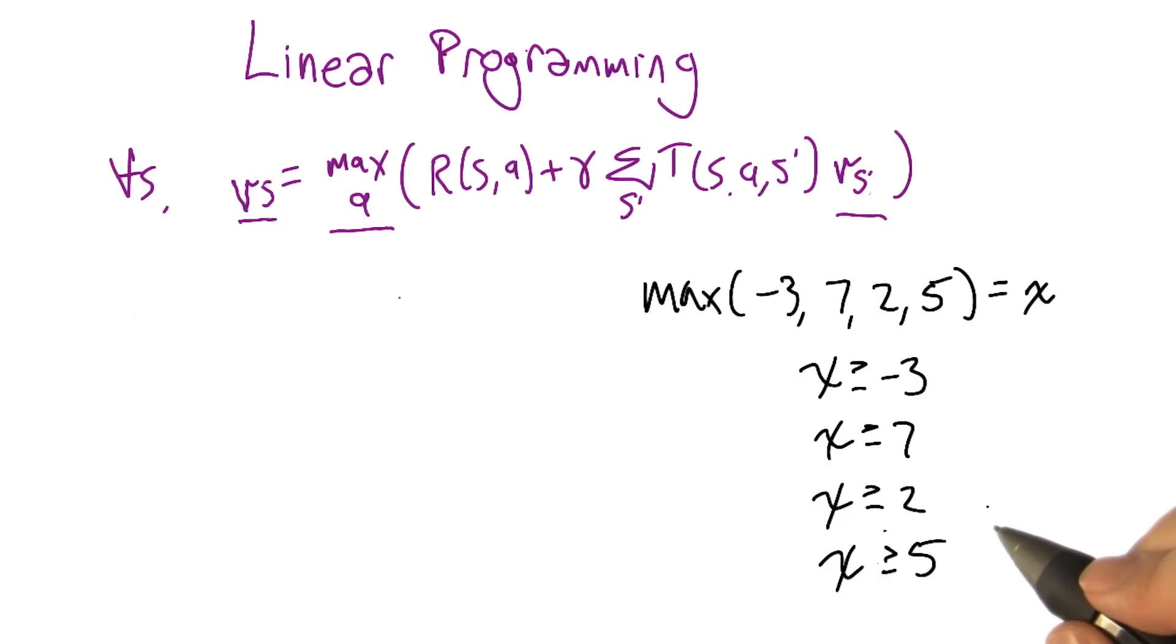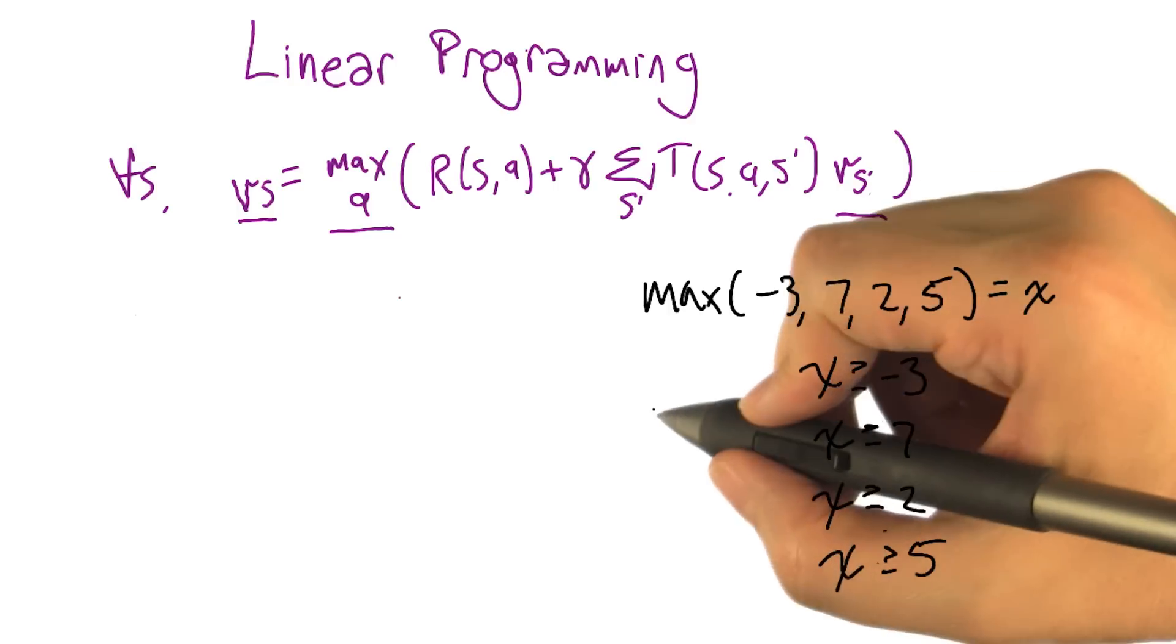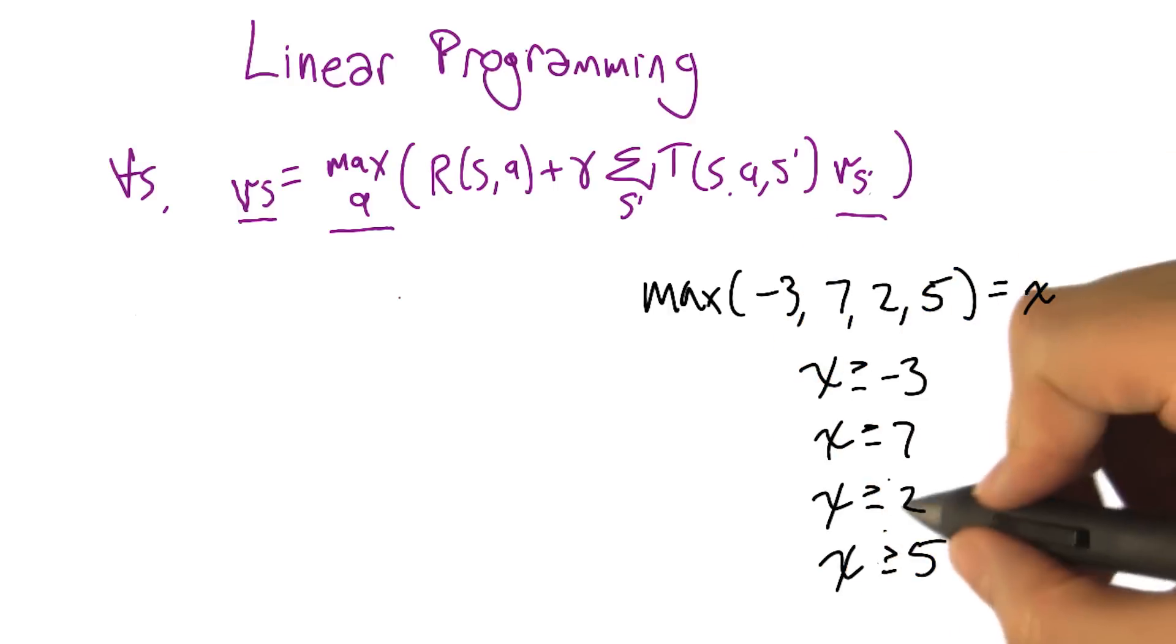And why is that? Because 9 is also greater than or equal to all of those things. It is, and 9 is the max of these things. No. No, that's not quite true. So what do we have to say? We have to say that it's bigger than equal to all these things, and of all the things that are bigger than equal to all these things, we want the smallest such x, right?